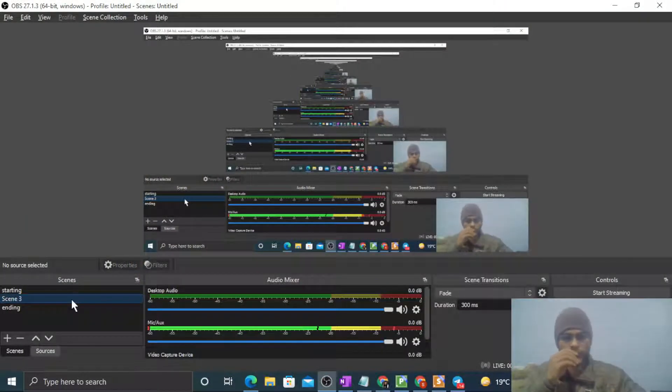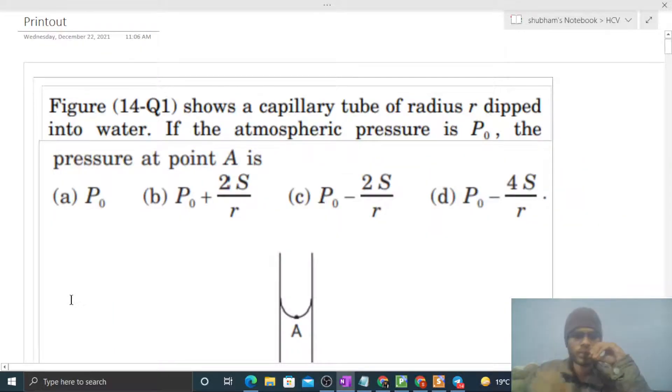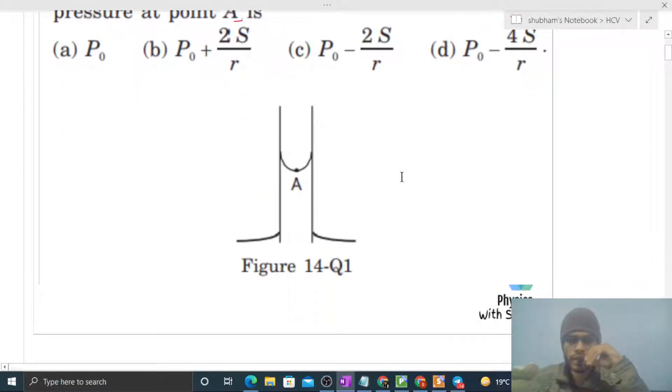Okay hi everyone, so today let's discuss one interesting problem. It says the figure shows a capillary tube of radius r dipped into water. If the atmospheric pressure is P0, the pressure at point A is what we need to find. So this is the diagram we have - a capillary tube and here water, and you can see here we have a meniscus form, a spherical meniscus.